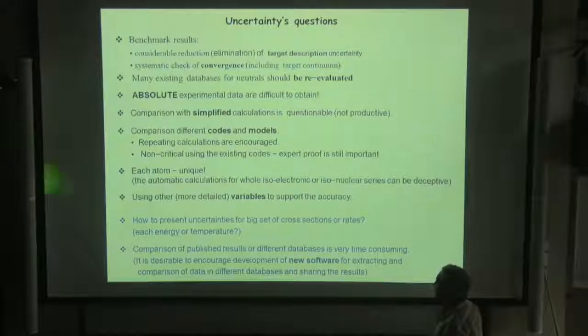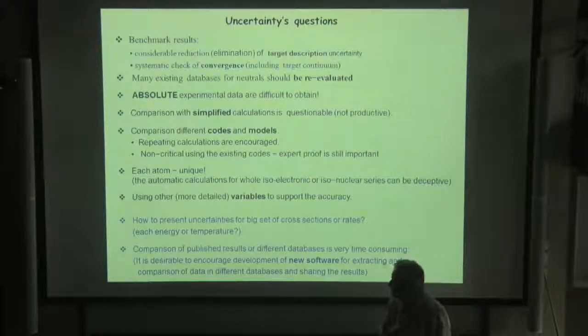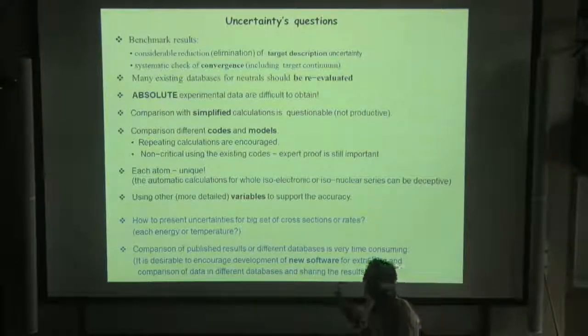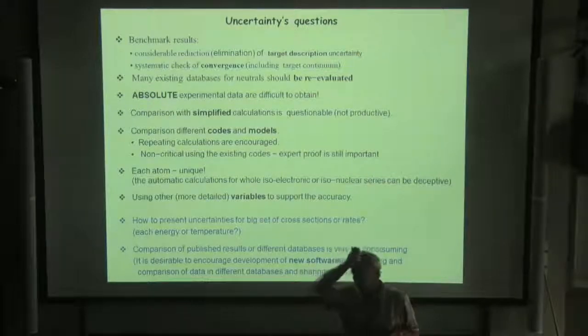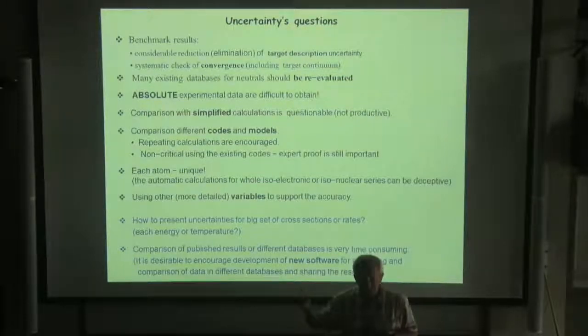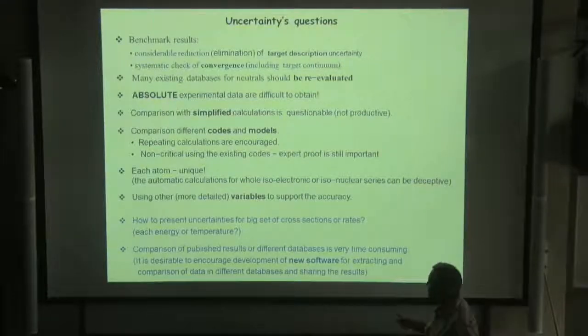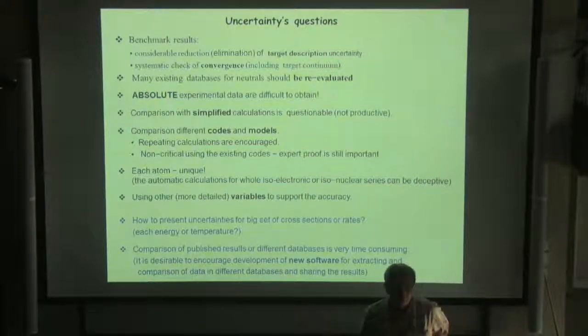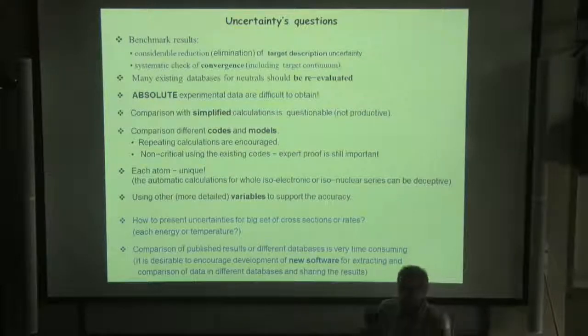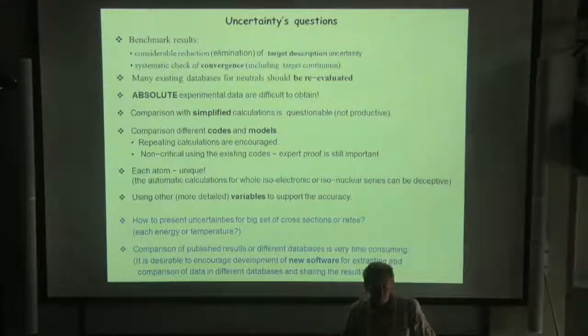Some more remarks. I will not stay here due to time. Just two technical questions: how to represent uncertainty in a set of cross-sections or rates. For example, excitation of iron: 7000 transitions, calculation of 10 energies - it's too much data. We need to present rate coefficients for each temperature and for each transition. Also, I would remark: comparison of published results is very time-consuming. So I would put as a question to encourage some software for automatic extraction of the data from different databases, comparison, and sharing of results somehow. Okay, let's do it right.